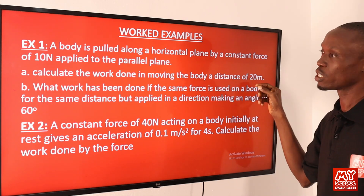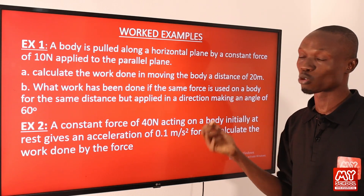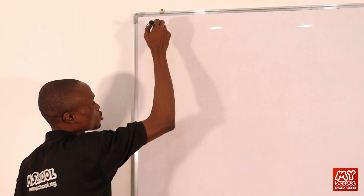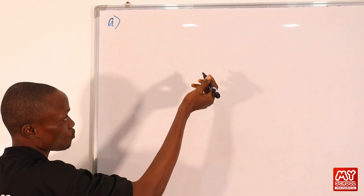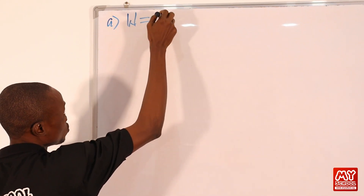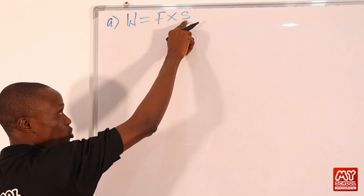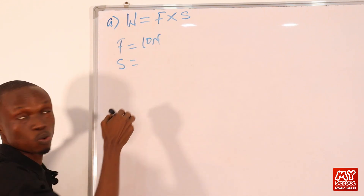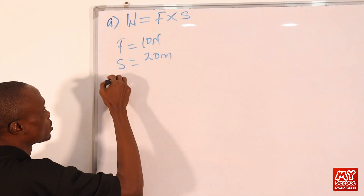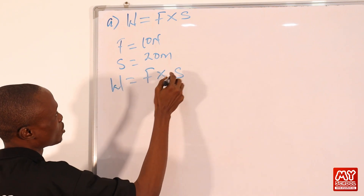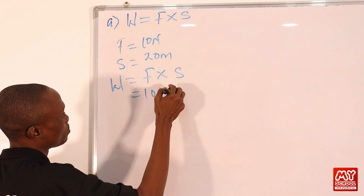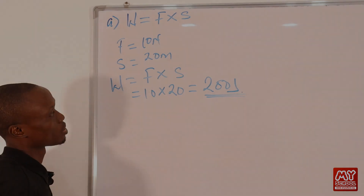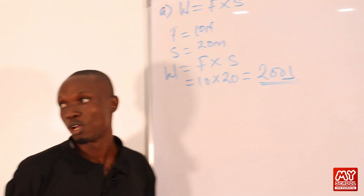To solve, first write out the given parameters and state the formula. We know W = F × d. Force F = 10 N and distance d = 20 m. Substituting: W = 10 × 20 = 200 joules. The answer to part A is 200 joules.